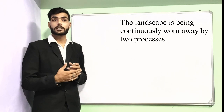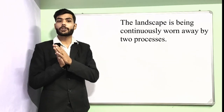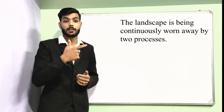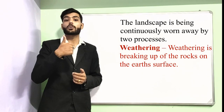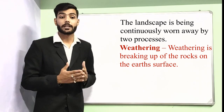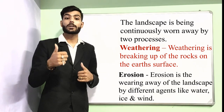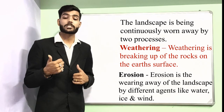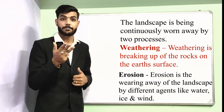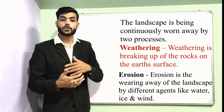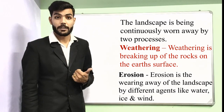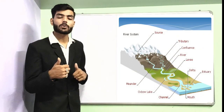Now for exogenic forces: the landscape is continuously worn away by two processes — weathering and erosion. Weathering is the breaking up of rocks on the earth's surface, whereas erosion is the wearing away of the landscape by different agents like water, ice, and wind.